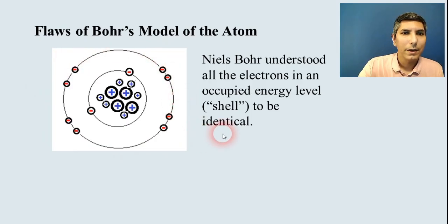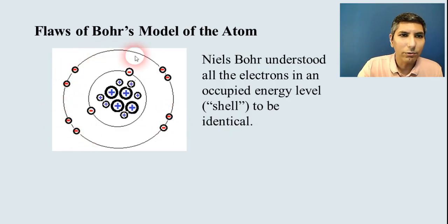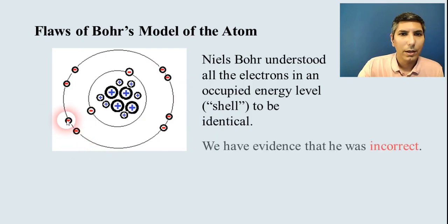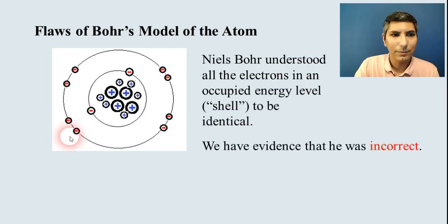We basically have 10 protons here in the middle and 10 electrons scattered in these two energy levels — I've left out the neutrons. Niels Bohr thought that all eight of these electrons in the second energy level were identical. As it turns out, today we have evidence that he was incorrect.